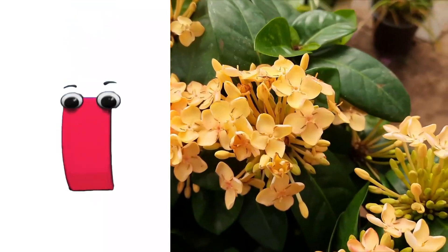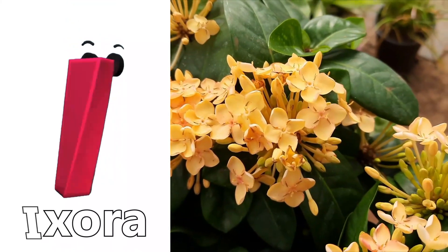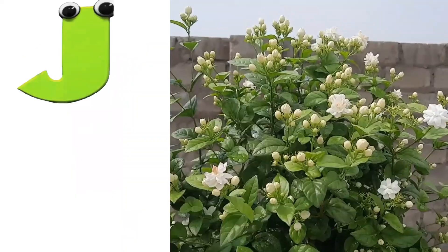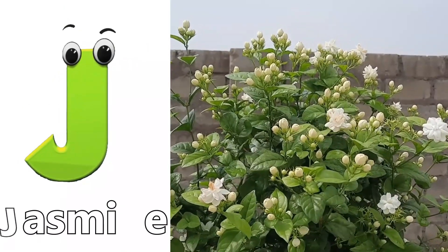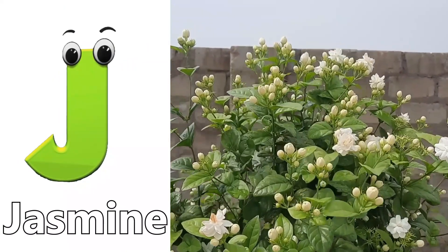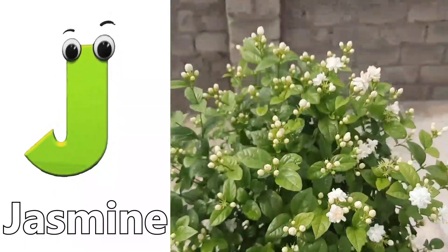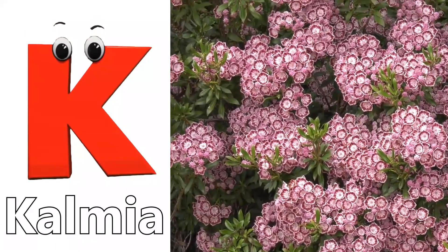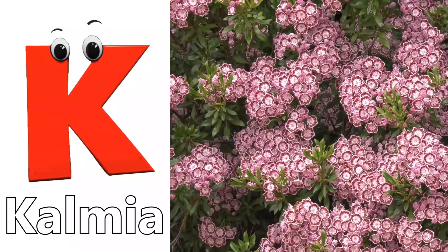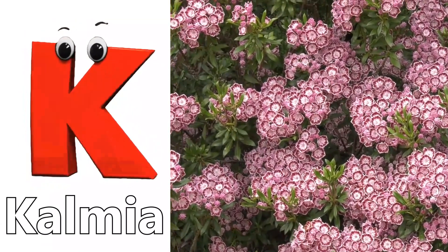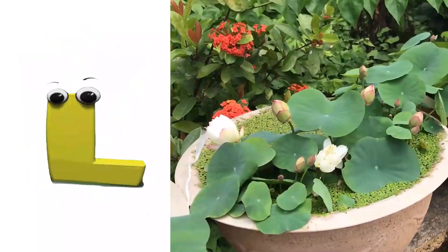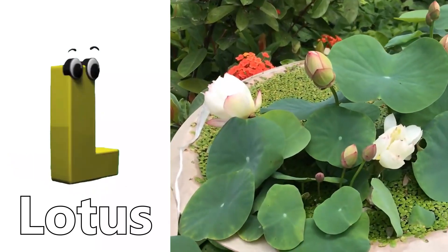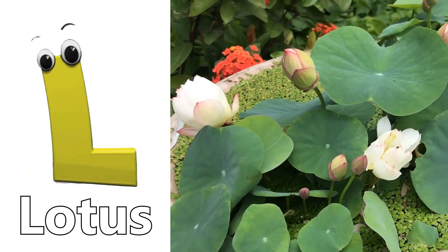I is for Exora. J is for Jasmine. K is for Kalmia. L is for Lotus.